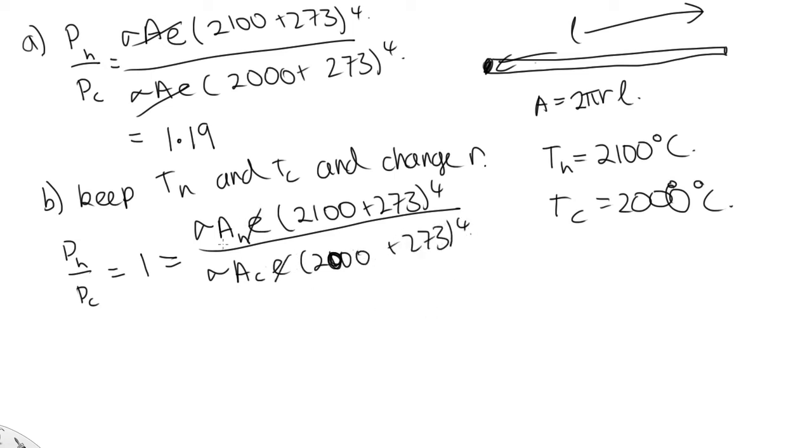So that cancels, that cancels. Now this part we've solved up here - we know that the value of this is 1.19. So let's replace that with 1.19. And now we've got 1/1.19 = Ah/Ac. And we've seen that the surface area is equal to 2π. Now this is R for the hot one times the length, over 2πR for the cold one times the length.